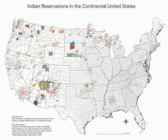Alaska Natives previously had many small reserves scattered around Alaska; however, all but one — the Annette Island Reserve of the Tsimshian — were repealed with the passage of the Alaska Native Claims Settlement Act in 1971.